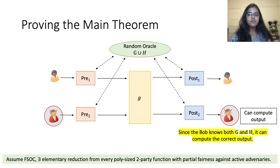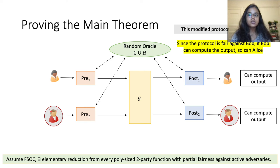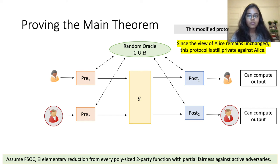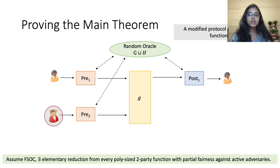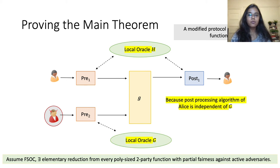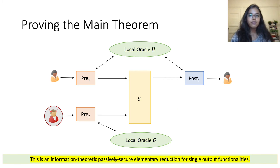Both oracles are available to Bob, who can then use them in the post-processing phase to correctly recover the output. From our original assumption, since the protocol is fair against corrupt Bob, and since Bob can recover the output, Alice should also be able to recover the output — so correctness of this modified protocol holds. Moreover, since Alice's view in this modified protocol remains unchanged, if the original protocol was private against a semi-honest Alice, this modified protocol is also private against Alice. We can further modify this protocol so that only Alice gets an output by removing Bob's post-processing phase. Since Alice's post-processing algorithm is independent of G, we can ask Alice to lazy-sample its own oracle H and Bob to sample its own oracle G, giving us an information-theoretic passively-secure non-interactive reduction that delivers output only to the first party.